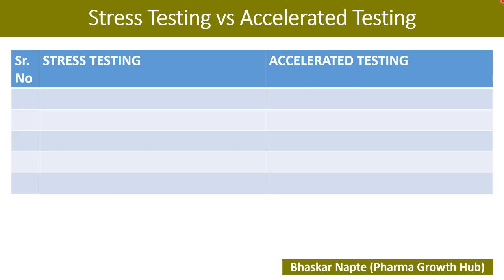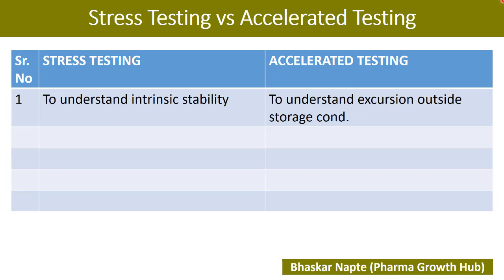Let us talk about stress testing first — this is point number one. Stress testing is conducted to understand the intrinsic stability of a molecule. Intrinsic stability means the natural way a molecule undergoes degradation. For example, a molecule that is unstable in acidic pH — that is the intrinsic nature of the molecule. You study degradation at various conditions to understand the intrinsic properties and the different degradation pathways your molecule undergoes. This study is called stress testing.